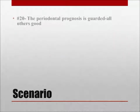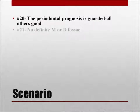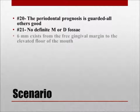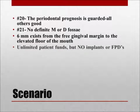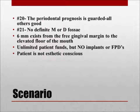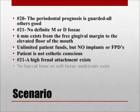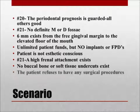Tooth number 20 has a guarded periodontal prognosis; the prognosis for all others is good. Number 21 has no definite mesial or distal fossa. Six millimeters exists from the free gingival margin to the elevated floor of the mouth. The patient has unlimited funds but no implants or fixed partial dentures. The patient is not aesthetically conscious. Number 21 has a high frenal attachment. No buccal bone or soft tissue undercuts are present to interfere with the path of placement, and the patient refuses any surgical procedures.